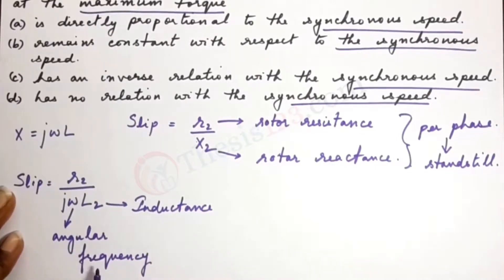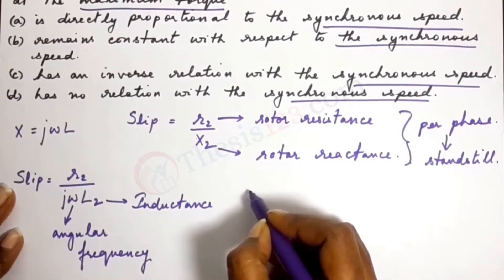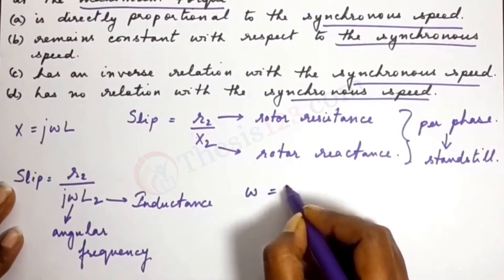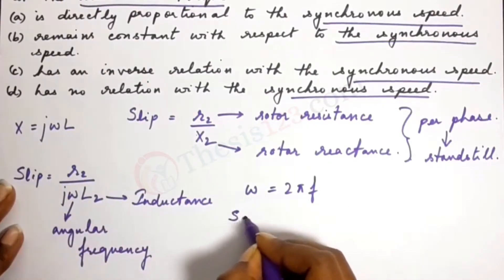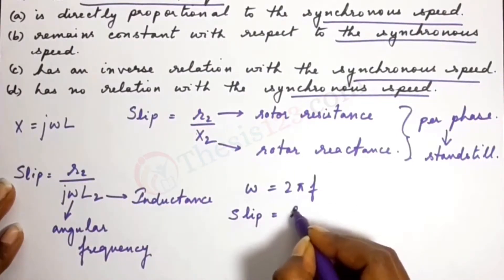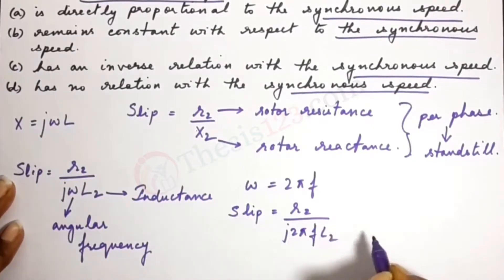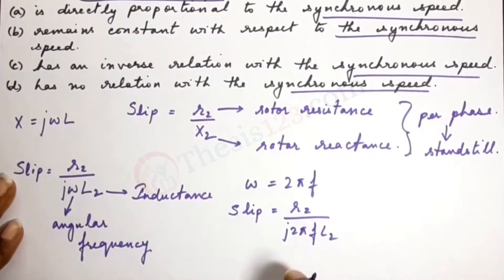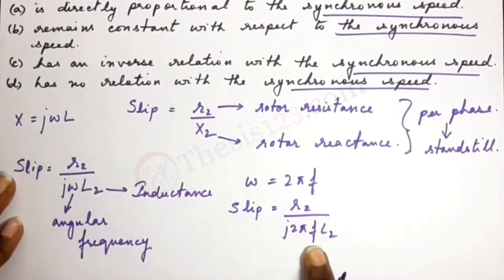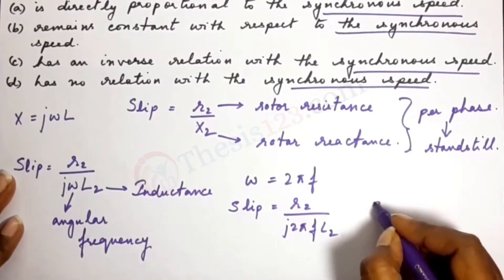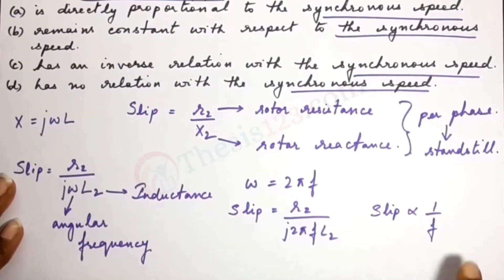Angular frequency can be written in terms of frequency F: omega equals 2 pi F. Substituting this, we get slip equals R2 divided by j 2 pi F L2. According to this, slip is inversely proportional to F. Slip is inversely proportional to frequency.